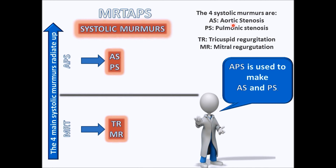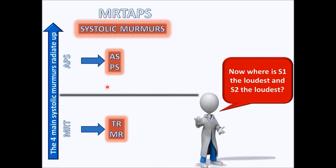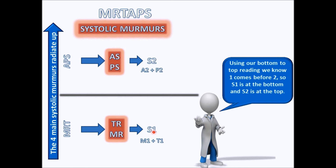Now that we know these are systolic murmurs, there's more information we can get using Mr. TAPPS. Sometimes they ask where S1 and S2 are — where is it the loudest or where is it made? Since M is our anchor and number one comes before number two, S1 is going to be down here at the bottom and S2 is going to be up top.